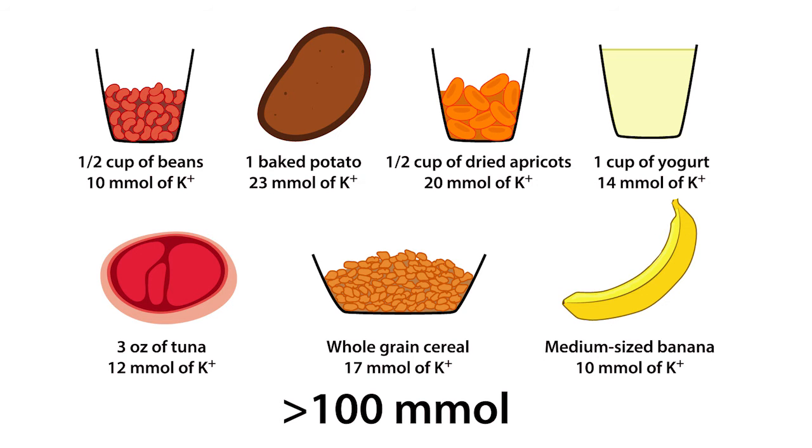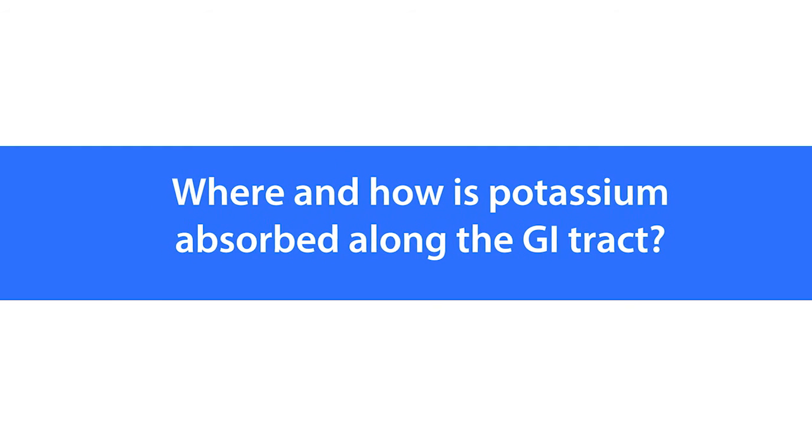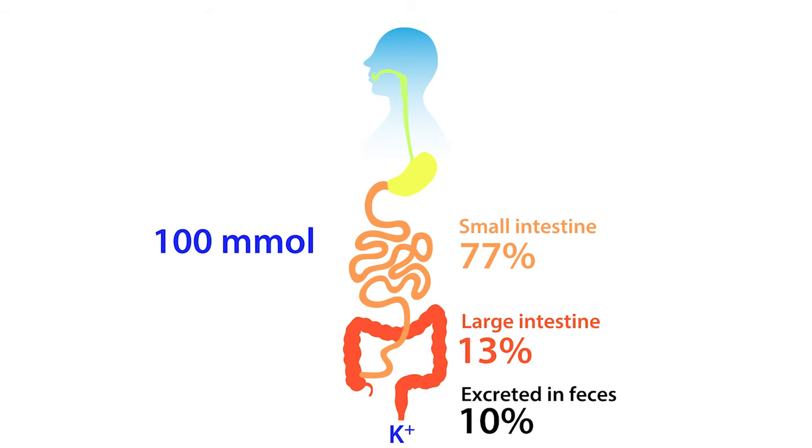Once we consume these foods, where and how is potassium absorbed along the GI tract? Of the 100 millimoles of potassium ingested, 77% is absorbed along the small intestine, 13% is absorbed along the large intestine, while 10% is excreted in the feces.